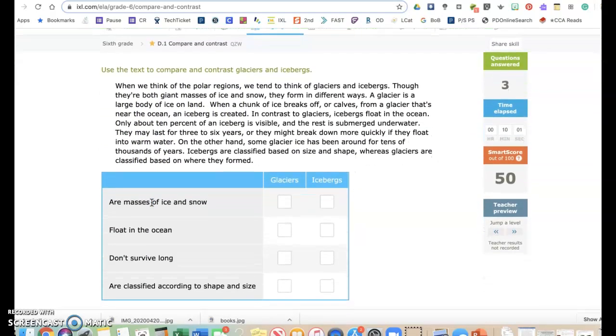When we think of the polar regions, we tend to think of glaciers and icebergs. Though they're both giant masses of ice and snow, they form in different ways. A glacier is a large body of ice on land. When a chunk of ice breaks off, or calves, from a glacier that's near the ocean, an iceberg is created. In contrast to glaciers, icebergs float in the ocean. Only about 10% of an iceberg is visible, and the rest is submerged underwater. They may last for three to six years, or they may break down more quickly if they float into warm water. On the other hand, some glacier ice has been around for tens of thousands of years. Icebergs are classified based on size and shape, whereas glaciers are classified based on where they formed. Interesting. So, glaciers are on land, and icebergs are pieces of glaciers that break off and float in the water.